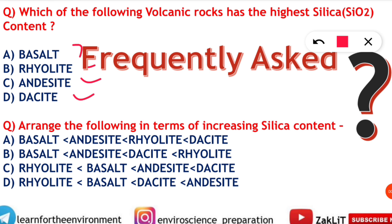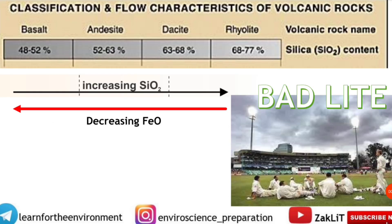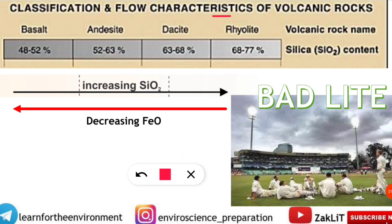It can also be asked in arranging order — they may ask you to arrange the following in terms of increasing silica content. If you don't know which rock has what percentage of silica, you won't be able to answer this type of question. So for this, we have made a trick to remember. On the top of the screen you can see the classification and flow characteristics of volcanic rocks — basalt, andesite, dacite, and rhyolite.